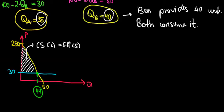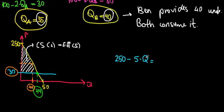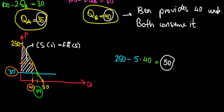Now we compare this with the private allocation. Under the private scenario, Ben provides 40 units. At 40 units, substituting into the market demand: 250 minus 5 times 40 equals 250 minus 200, which equals 50 euros. So the value on the market of those units of the public good is 50 euros.